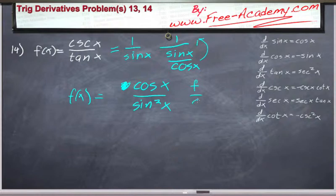So we have f over g. f is equal to cosine of x. g is equal to sine squared of x.